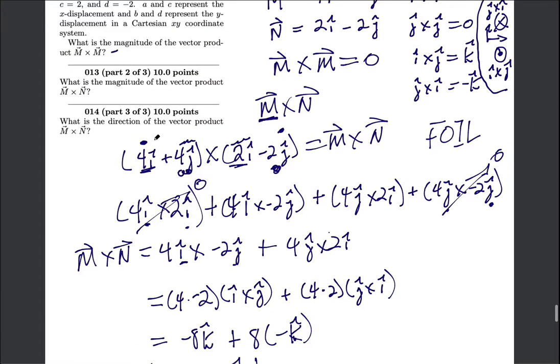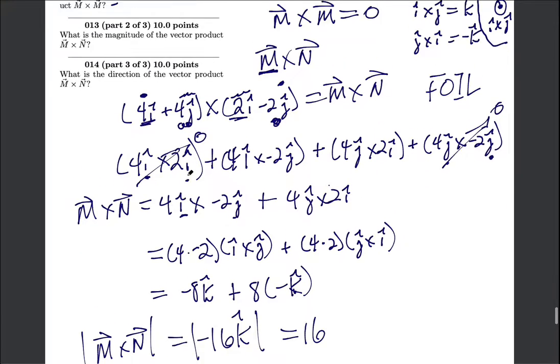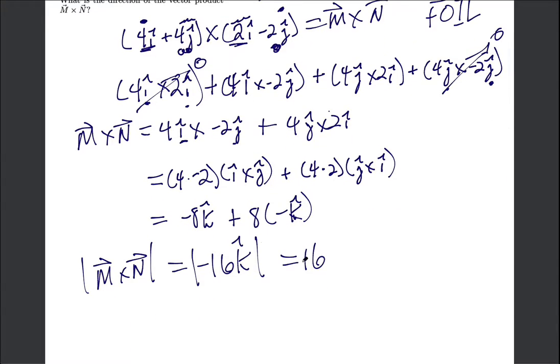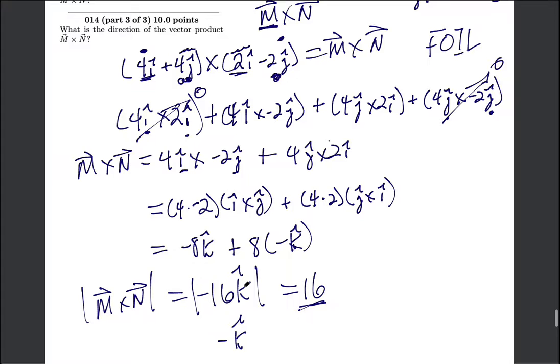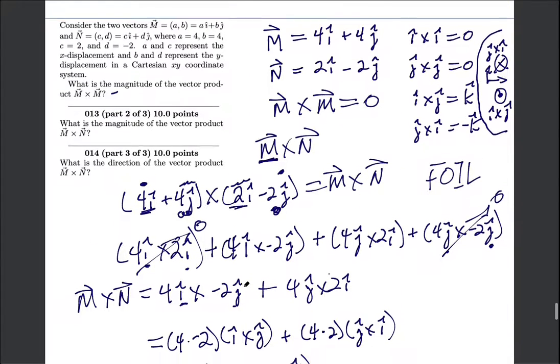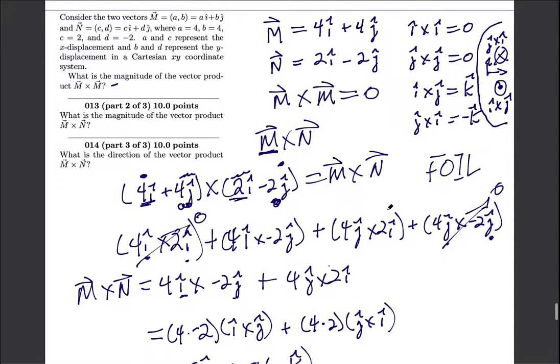And then the direction would be negative k-hat, but I don't think that's one of the answer choices for this question. So be careful, see if you can figure out what it would be if the magnitude is 16 and the direction is negative k-hat, which one of those would be the giveaway. So I do recognize this was tedious, but it was a really good way to practice doing the cross product and to remind you how these unit vectors worked. Okay, good luck.